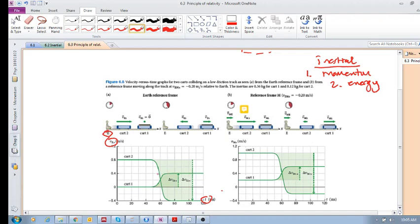So cart 2 obviously is moving towards cart 1. They collide, they interact, and their velocities change. For example, cart 2 then begins to move in the negative direction, and cart 1 begins to move in the positive direction. Now the point is that this is in the Earth Reference Frame, and we're very used to that.